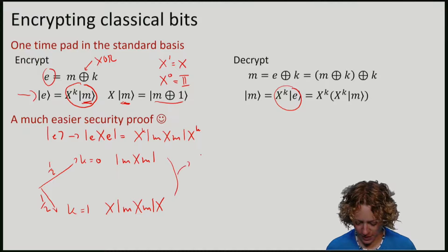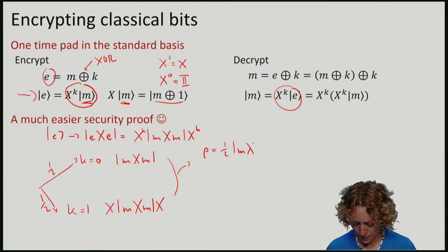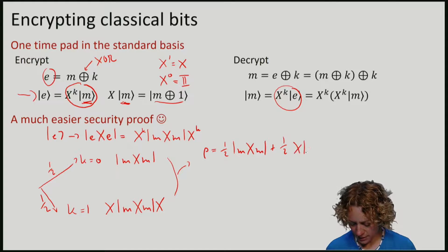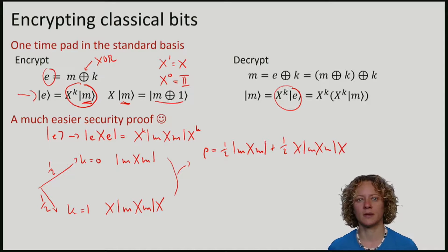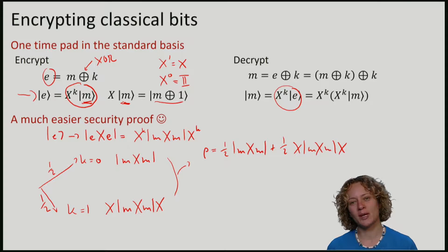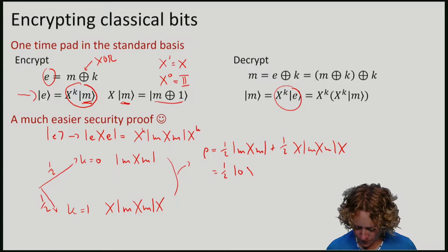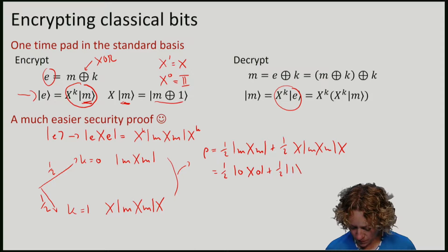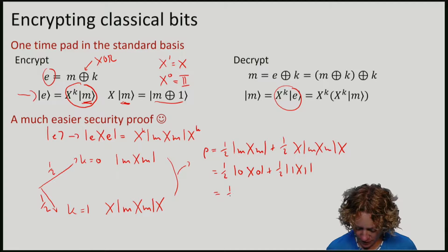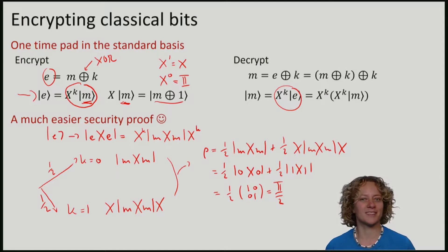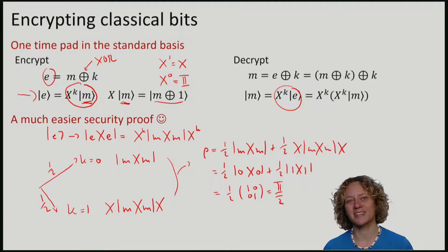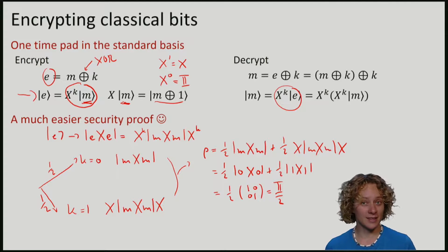If I plug in here the elements of the standard basis, we can see that no matter what M is, whether it's 1 or 0 to begin with, we just have half times 0 plus half times 1. And this is precisely half times the identity matrix, the maximally mixed state. You can see that we get the maximally mixed state completely independently of what the message is. And it is clear that Eve cannot gain any information from something that is independent of the message.